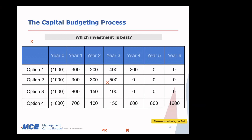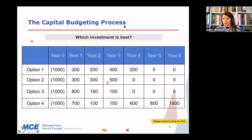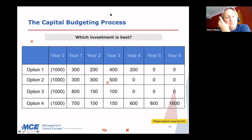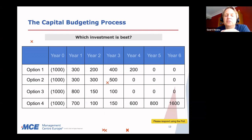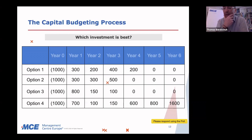Someone who chose option two — why option two? I chose option two because the investment brings your money back in three years' time. Not waiting six years for some return — in a short period you can do a lot more with your 1.1 million, which probably brings more than the other options. So what you're saying is you're trying to avoid the uncertainty of cash flows that go very far into the future, and you want to get the investment back as soon as possible.